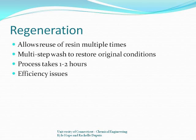Regeneration begins by backwashing the system to dislodge any trapped particles and to fluidize the resin. This is followed by a slow wash with the regenerant solution, which is a dissociative solution that provides the ions necessary for exchange, such as hydrochloric acid or sodium hydroxide. Next, another slow rinse occurs with water to remove any residual regenerant solution. Finally, a fast rinse takes place as an extra precaution against residual regenerant solution. At this point, regeneration is complete and the resin can be used for another cycle.